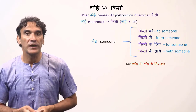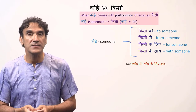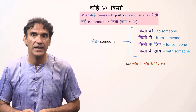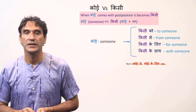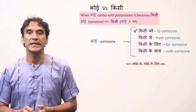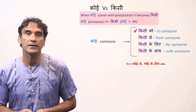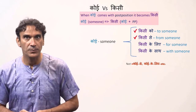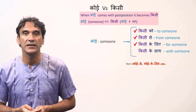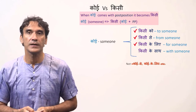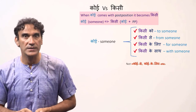Kisi is the oblique form of koi. That means when koi comes with a postposition, it becomes kisi. It should be kisi ko — to someone; kisi se — from someone; kisi ke liye — for someone; kisi ke saath — with someone.